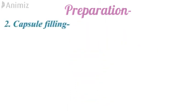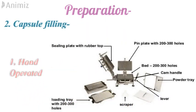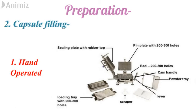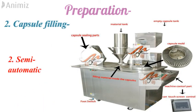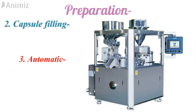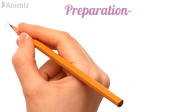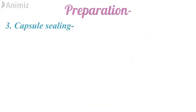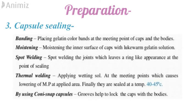The second step is filling of the capsule with a medicament, which can be done either by a hand-operated capsule filling machine, a semi-automatic capsule filling machine, or a fully automatic capsule filling machine. Finally, the sealing of capsules — they can be sealed by banding, placing gelatin colour bands at the melting point of caps and bodies; by moistening the inner surface of caps with lukewarm gelatin solution; by spot welding, which leaves a ring-like appearance at the point of sealing; by thermal welding; or by using coni-snap capsules, in which grooves help to lock the cap with the body.